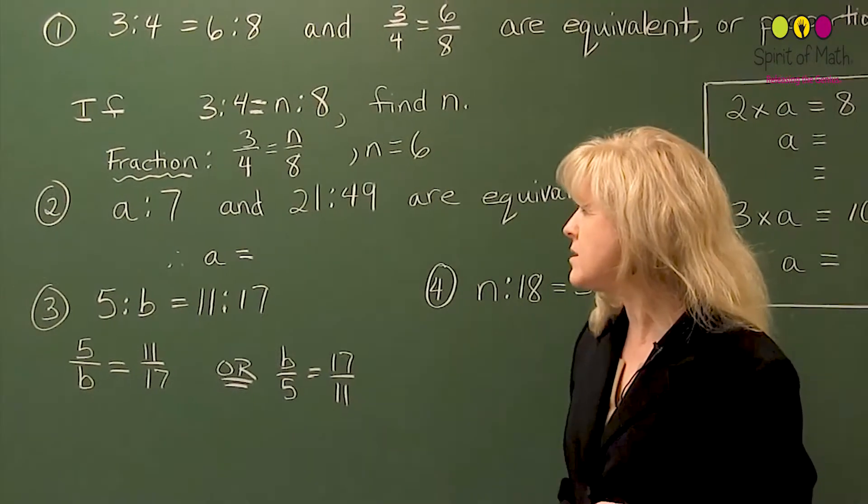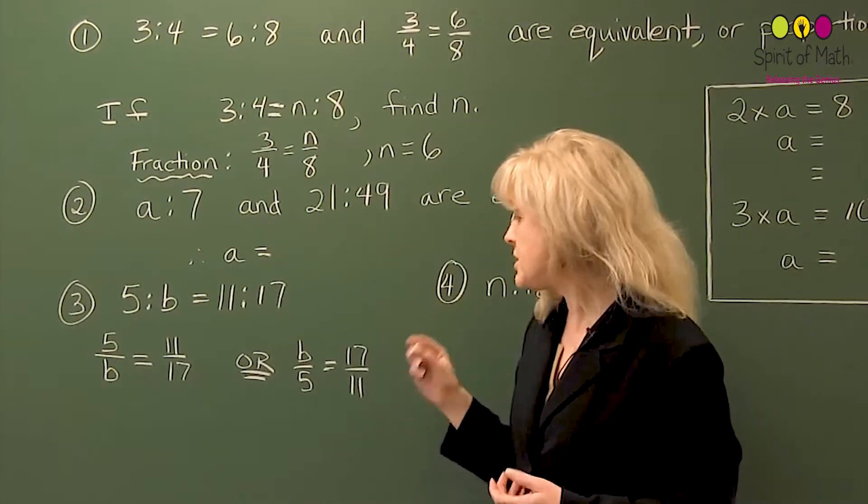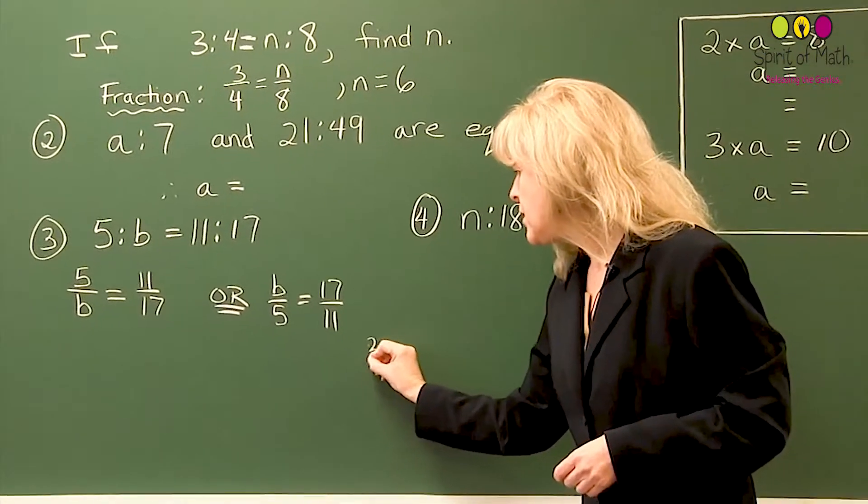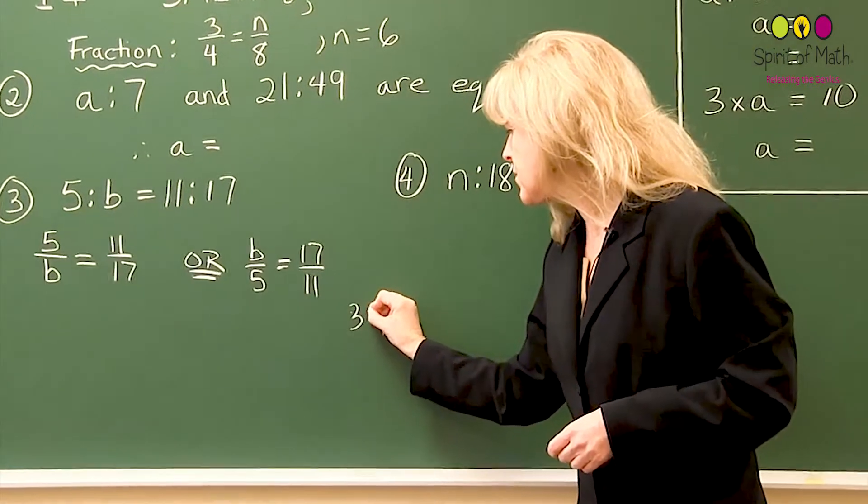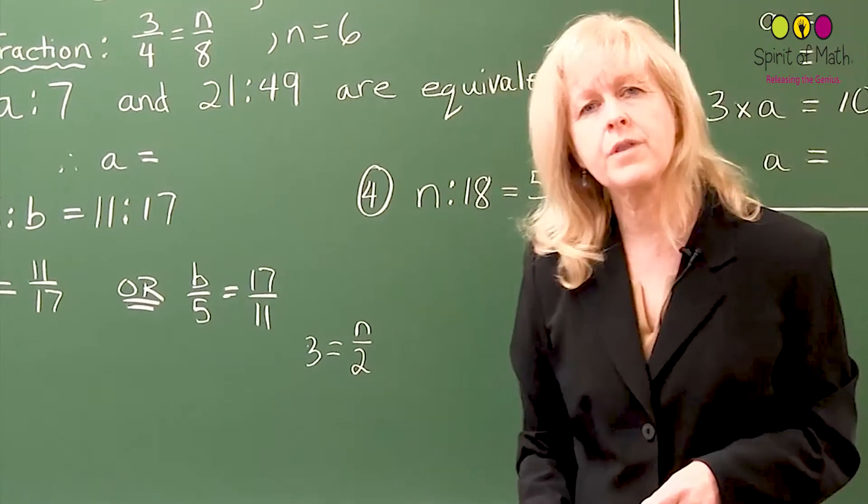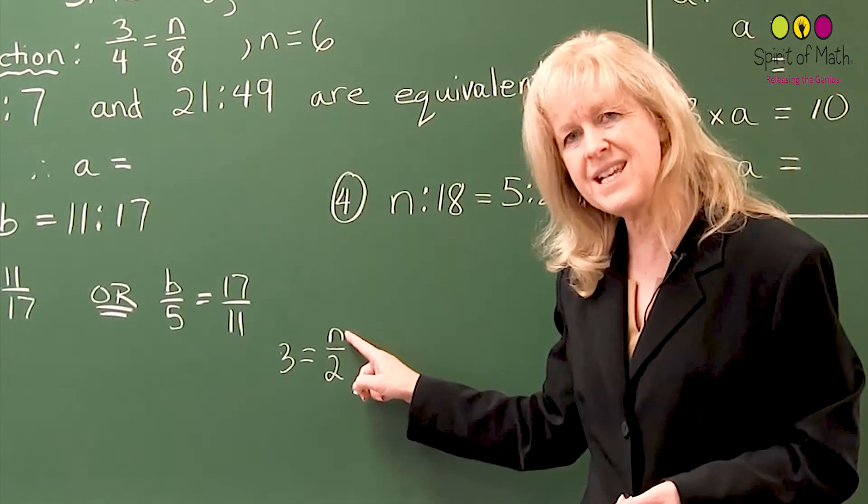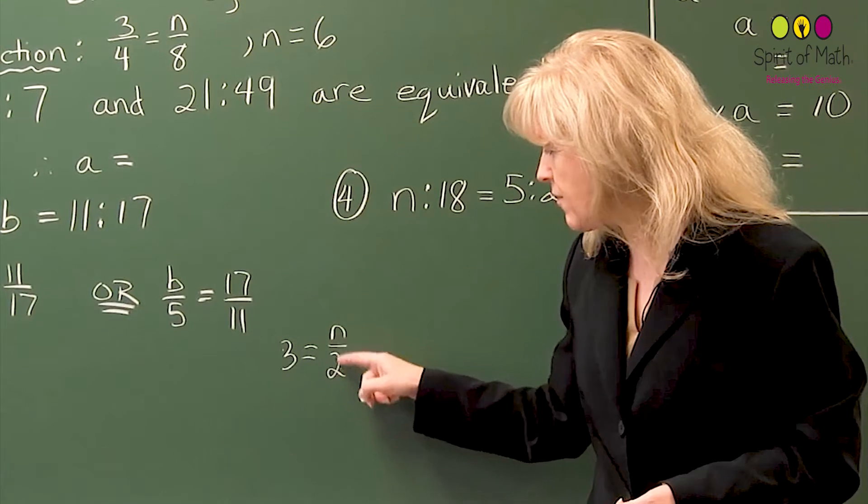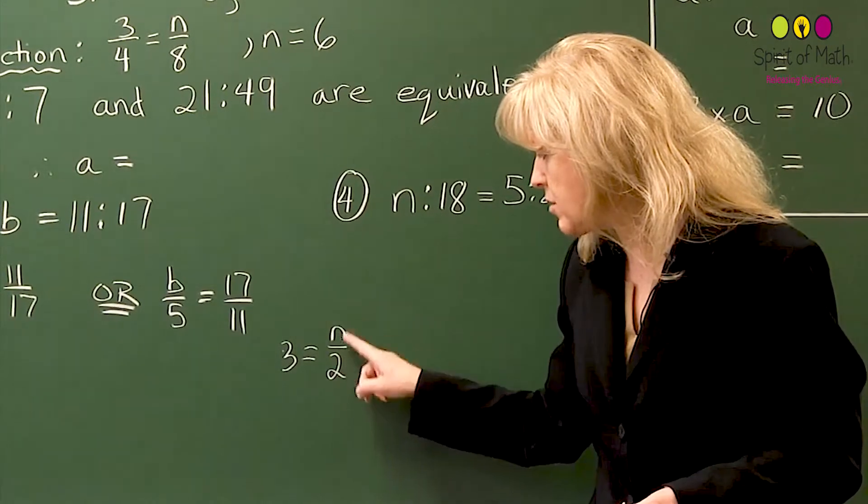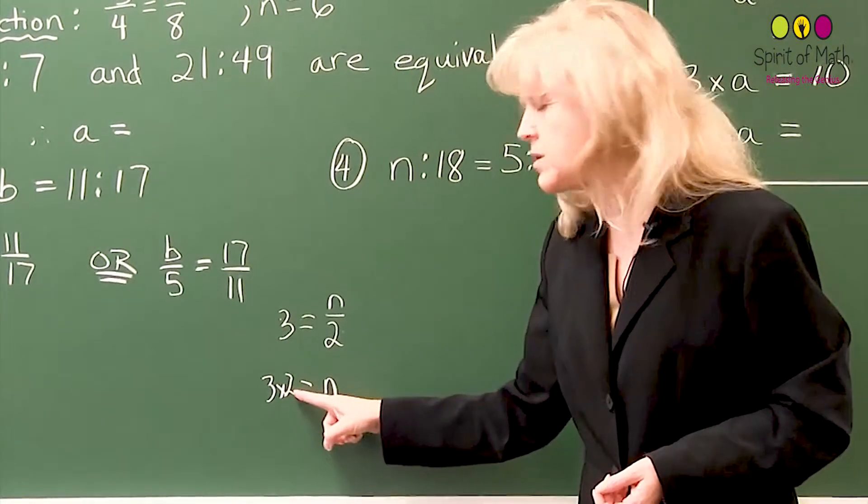Now, another way you can look at this is you can say, if you know what three quarters is equal to n to eight, then it's just like if you had a question. If you had three is equal to n over two, how would you solve that? So you have something divided by two is equal to three. Well, you know that something has to be a six. And another way you can think about that is do the reverse operation. So you can do n divided by two. Instead, you can do the reverse operation, do three times two would equal n. And three times two is six.